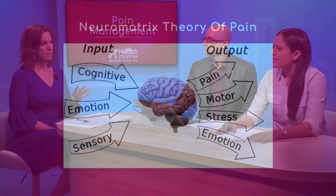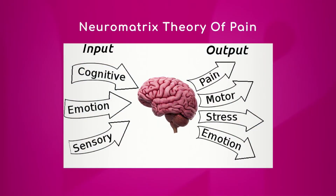Tell me about the theory of pain. So that pretty much shows how there are inputs into the brain and then the brain processes the information and then there are outputs that come out. The key point from this graphic is to see how pain is actually an output of the body — it's not something that's sent to the brain from your actual body part. It's something that the brain decides, and it decides to produce pain if it feels the body is threatened or in danger.